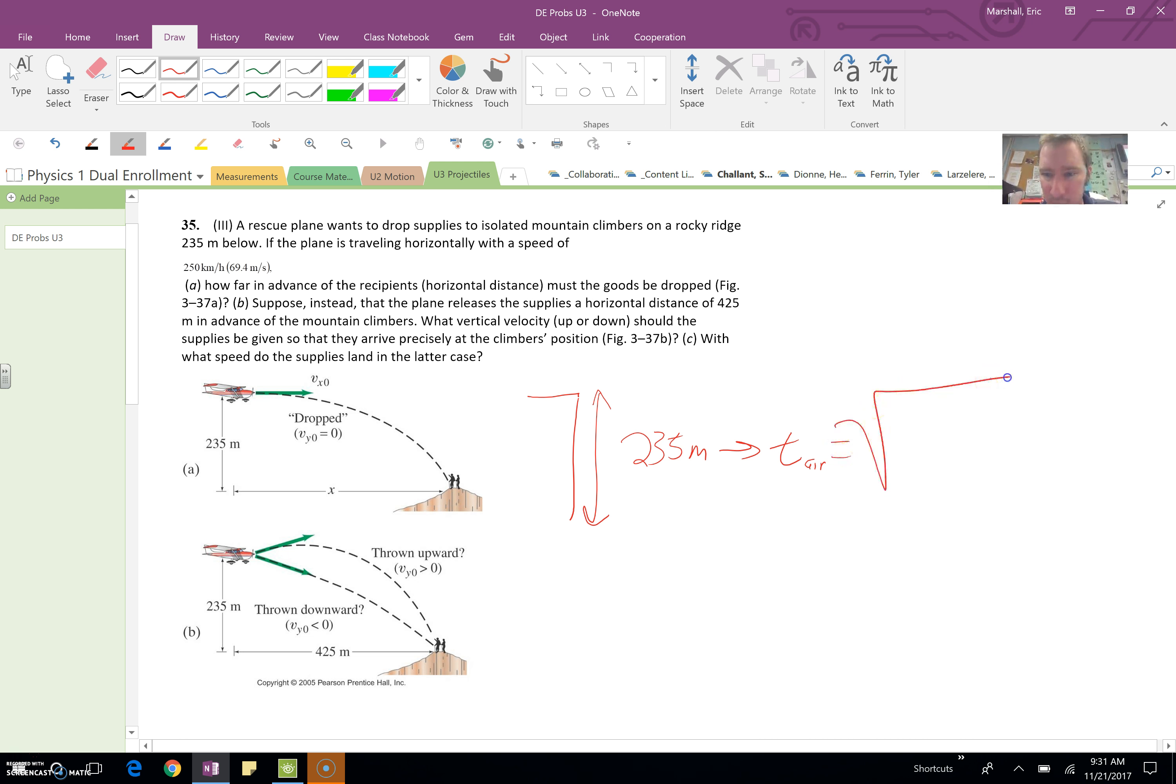Something like square root of the height divided by 4.9, you'll get a value. And then the distance in the horizontal is just velocity in the horizontal times time it's in the air.